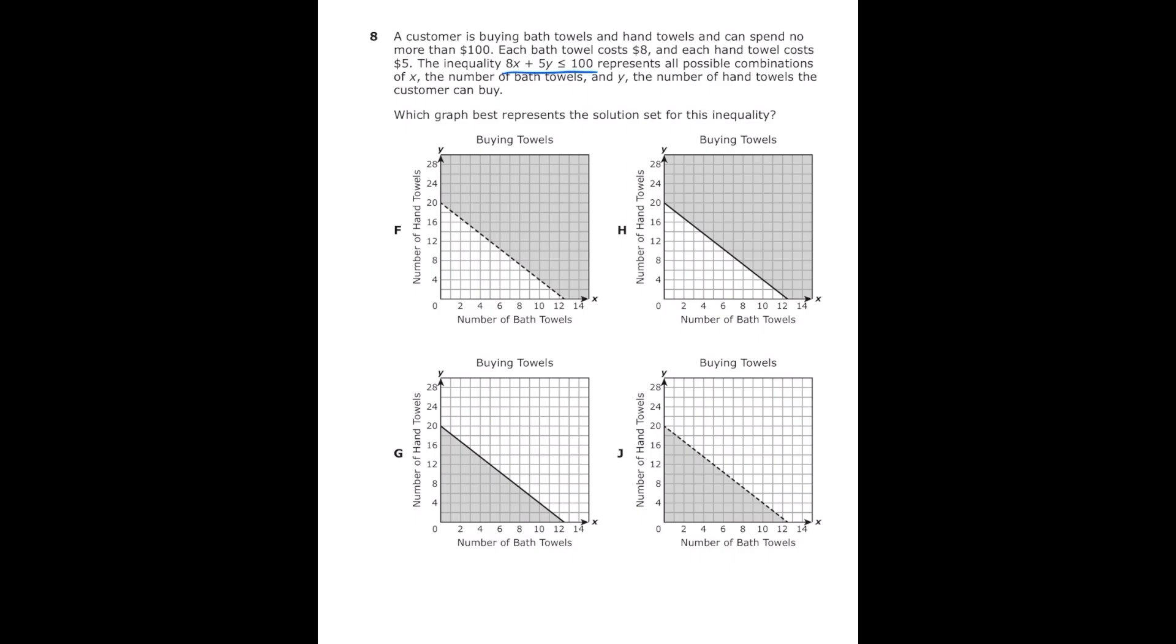Which graph best represents a solution set for the inequality? So they're already giving us an inequality that we can work with: 8x plus 5y is less than or equal to 100. So in order to graph that, I'm going to get y by itself and then go through each answer choice.